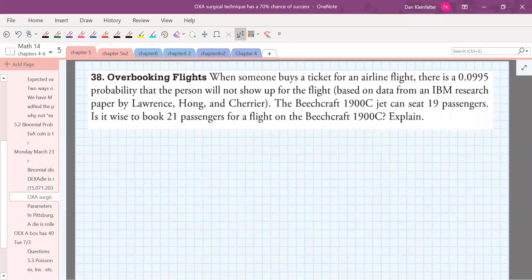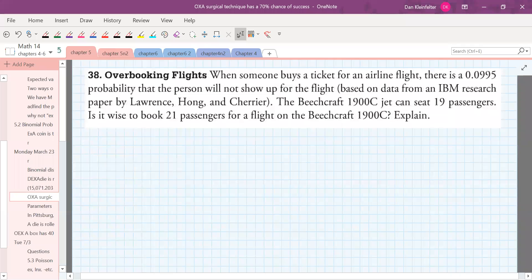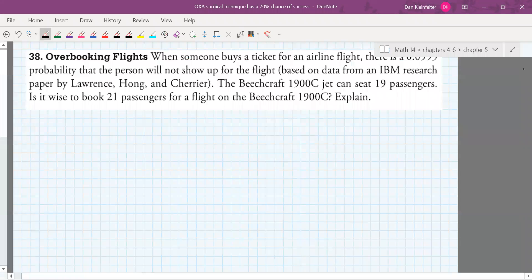Here, when someone buys a ticket for an airline flight, it says there's a .0995 probability that the person will not show up for the flight. And then we're given a source. Here it says that this particular airplane, the Beechcraft 1900C jet can seat 19 passengers. We want to know if it's wise to book 21 passengers for a flight on this plane.